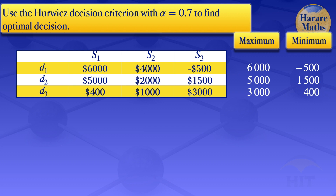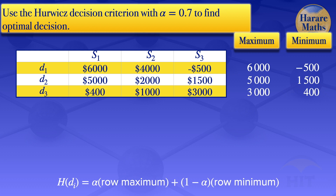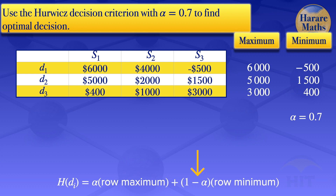The next step is to find the Hurwicz value for each decision alternative. We use the formula: Hurwicz value for decision i equals alpha multiplied by the maximum pay-off plus 1 minus alpha multiplied by the minimum pay-off. The alpha we are given is 0.7, and 1 minus alpha gives us 0.3.